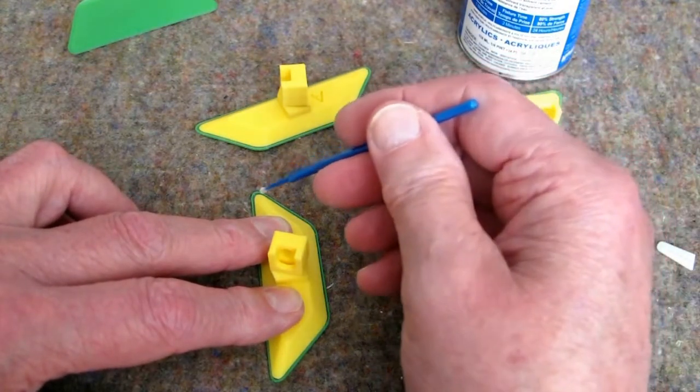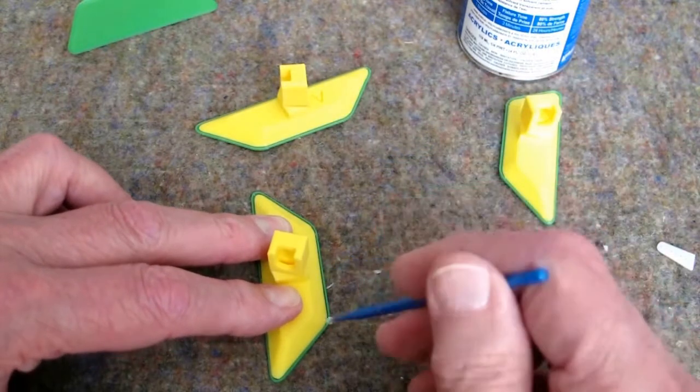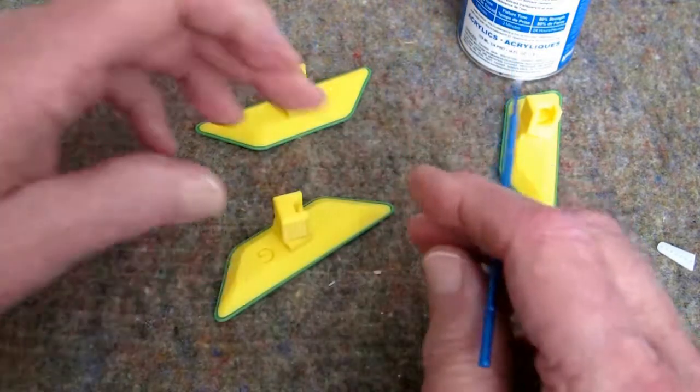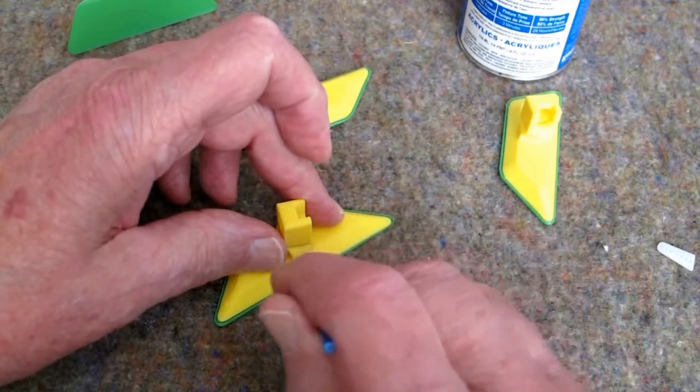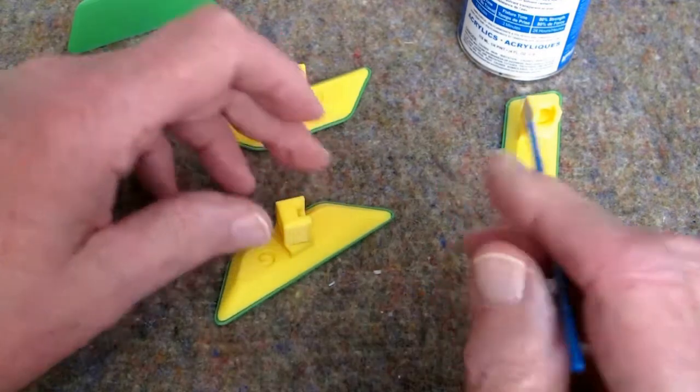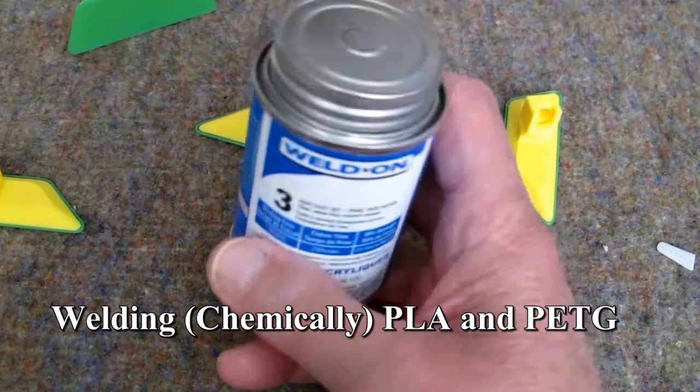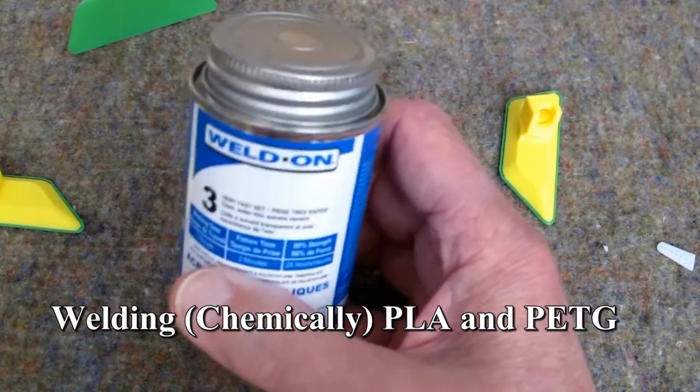I take a little dental applicator, dip it into the Weldon 3, and I just put a little bit and let that wick underneath that plastic while I'm holding it down tight. And then put a little bit along here, just like that. And that's all you have to do. I'm going to do another video on this, comparing it to a product that I used to get out of the UK. I'll show you that this is better.